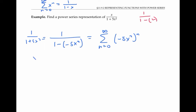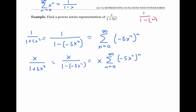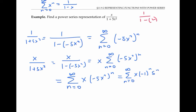Since I want a power series for x over one plus five x squared, I multiply everything by x. I drag the x inside the summation sign — I can do that because the summation is over n, which has nothing to do with x. Using laws of exponents, this becomes negative one to the n times five to the n times x to the two n plus one, giving a power series representation for the function.